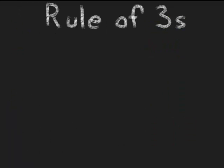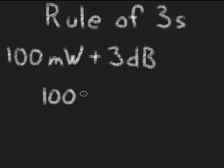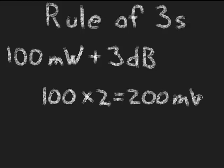So let's look at some examples. Let's start with the rule of 3s. If I have an access point and it's capable of transmitting at 100 mW, and I add an antenna that is supposed to give me a gain of 3 dB, I know that the rule says for every 3 dB of gain, my transmit power doubles. So I would have 100 times 2 equals 200 mW.